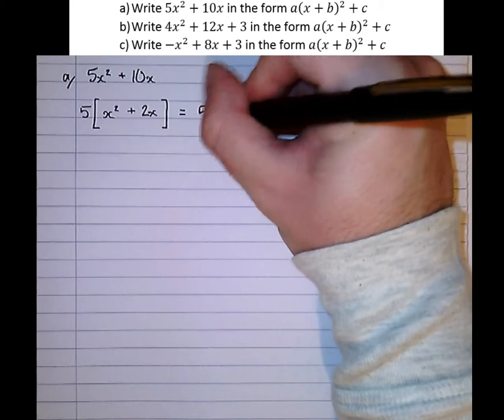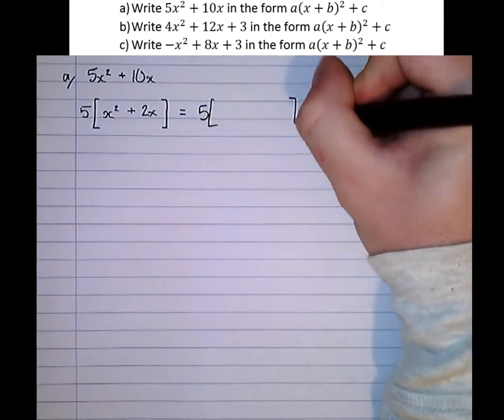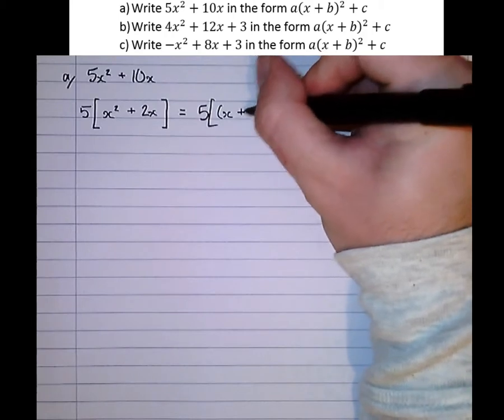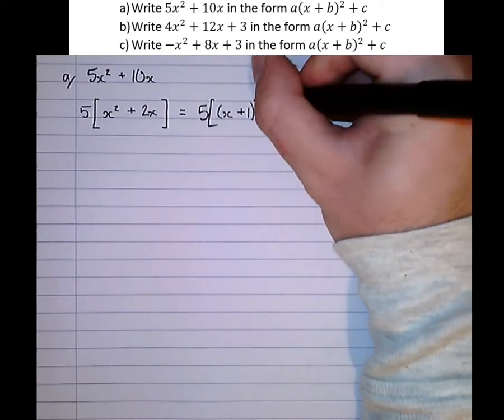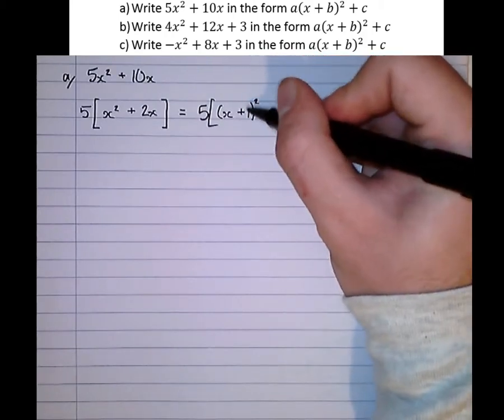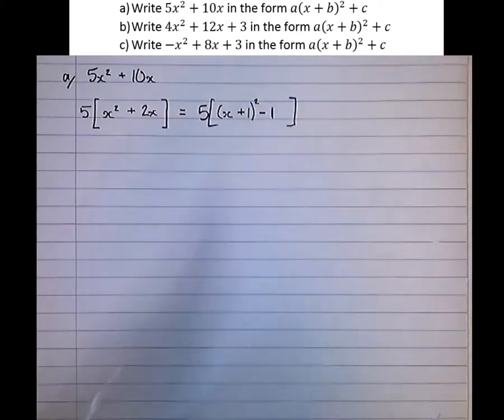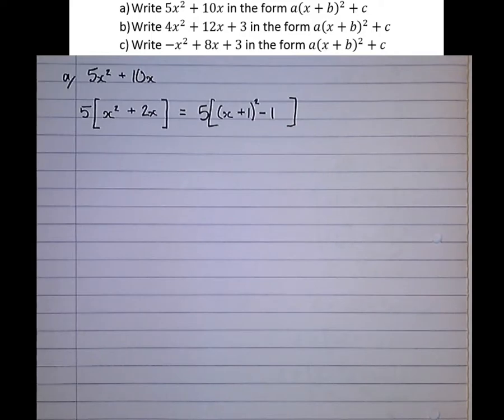Equals 5. Now let's complete the square for this. So half of 2 is 1, so 1 goes in the bracket here, squared. And the extra bit we're going to get is when this plus 1 is squared. So we take that off at the end.